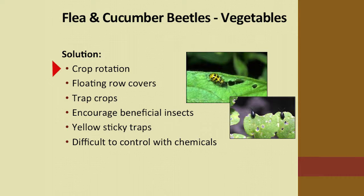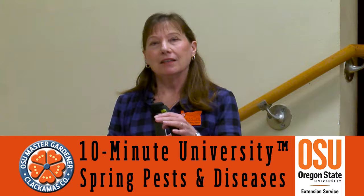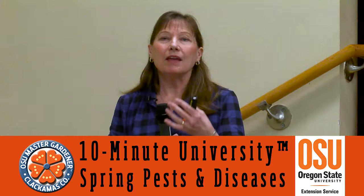Cucumber beetles are about the size of a ladybug but more oval-shaped. There are striped and spotted cucumber beetles — in our area we have more trouble with the spotted ones. Crop rotation is so important if you've had trouble with either beetle. The flea beetle overwinters as an adult in the ground in debris near where it fed last summer. The cucumber beetle lays her eggs under the soil in the same area where she found food the previous year, so if you plant the same crop in the same spot, you'll have trouble again.